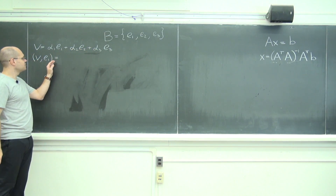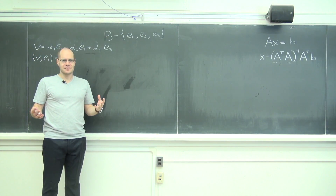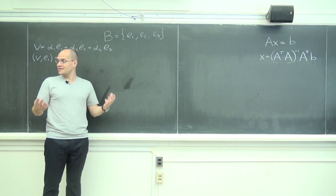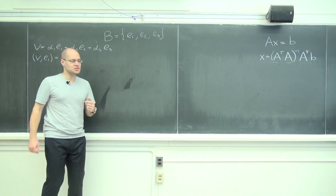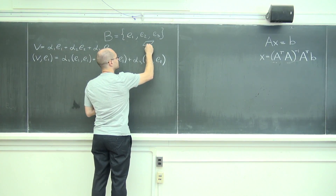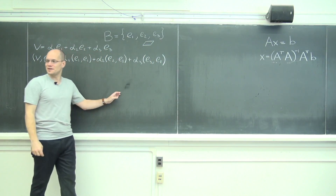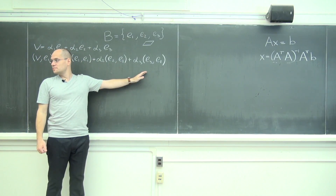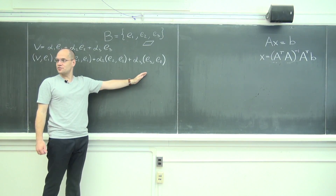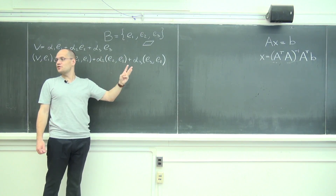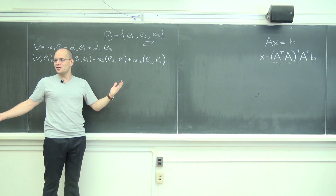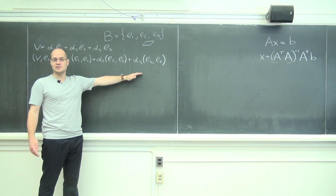Let's proceed as we were and just see what happens, because clearly what we're doing is meaningful. When we dot with e₁ for a general basis, do any of these terms cancel? No, because these inner products are not necessarily zero. Can we determine α₁, α₂, or α₃ from this single equation? No — we have one equation with three unknowns. Before, two terms dropped out, giving one equation with one unknown. Here we can't solve it.